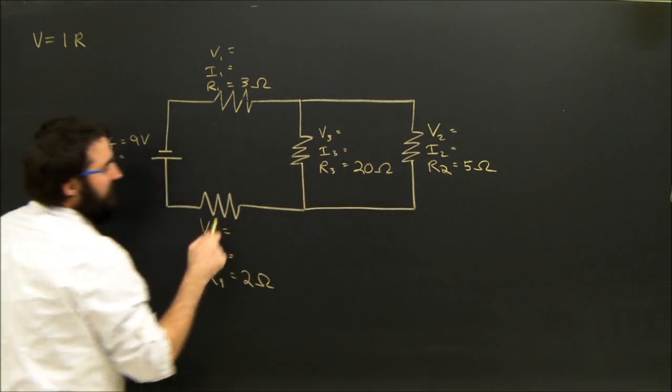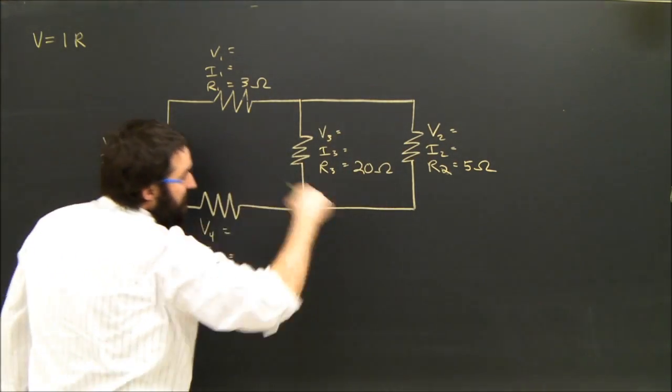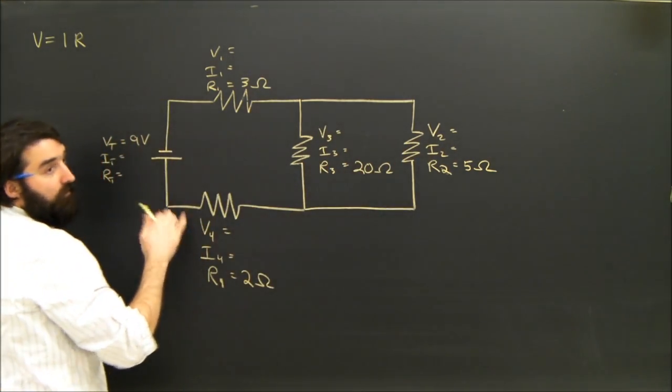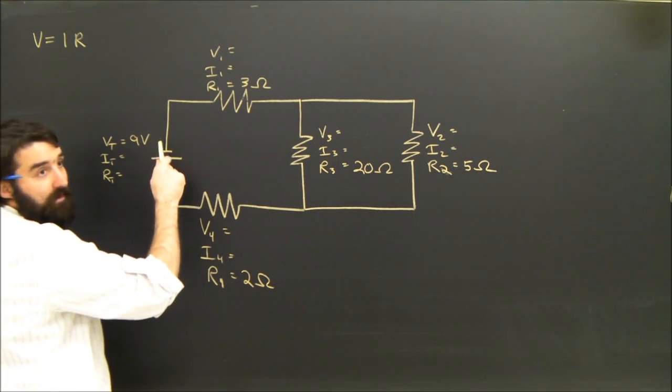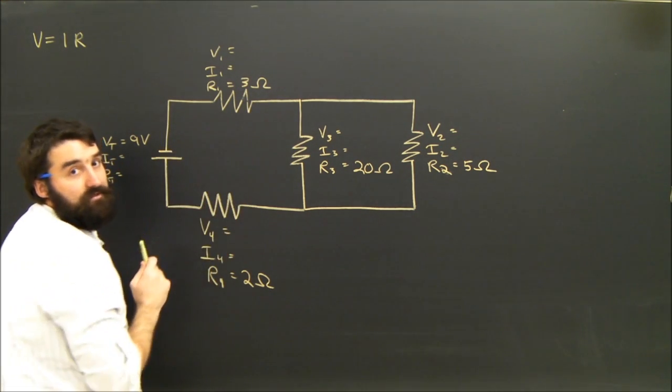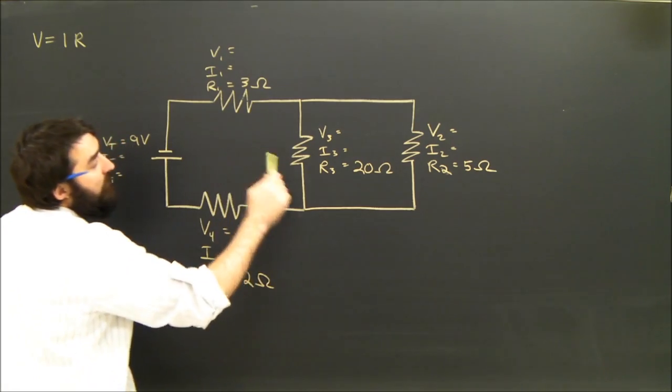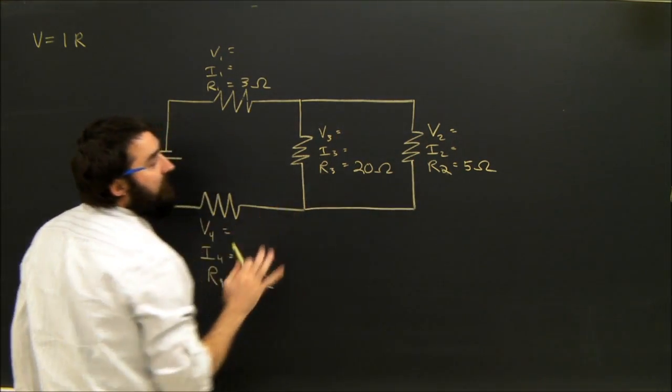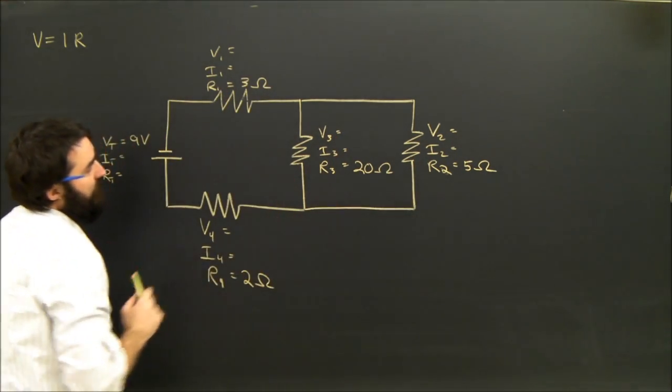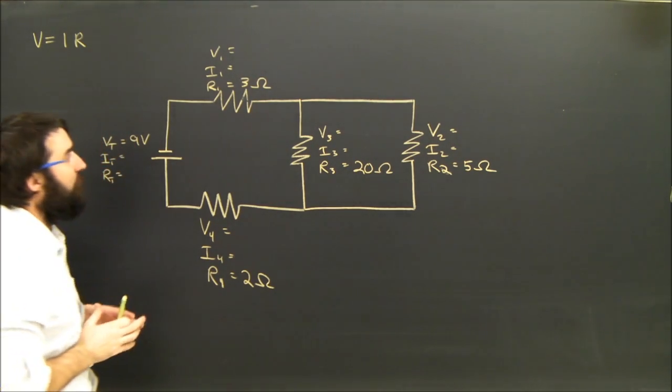4 and this whole group are in series, because if an electron goes through somewhere in this group, it's got to go through 4. They're in series. It's got to go through the battery. It's in series. It's got to go through resistor 1. It's all in series. So we've got 3 and 2 connected in parallel, connected in series with 1 and 4, and we know the total voltage is 9.